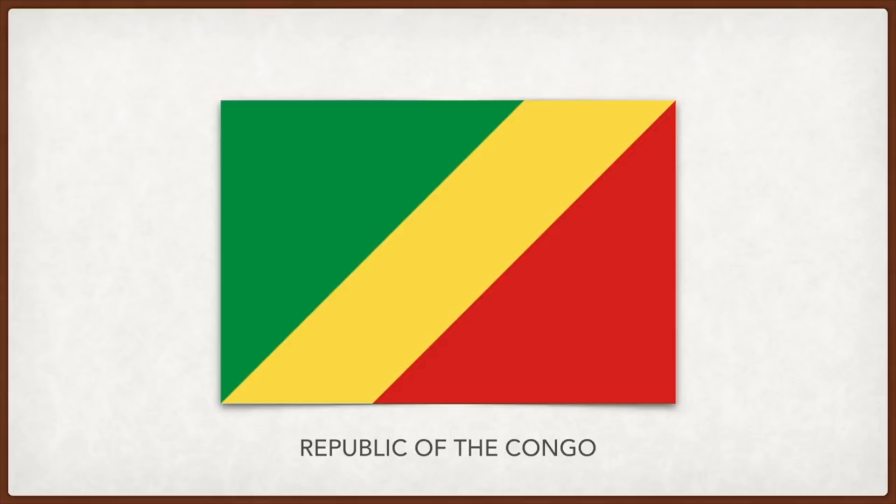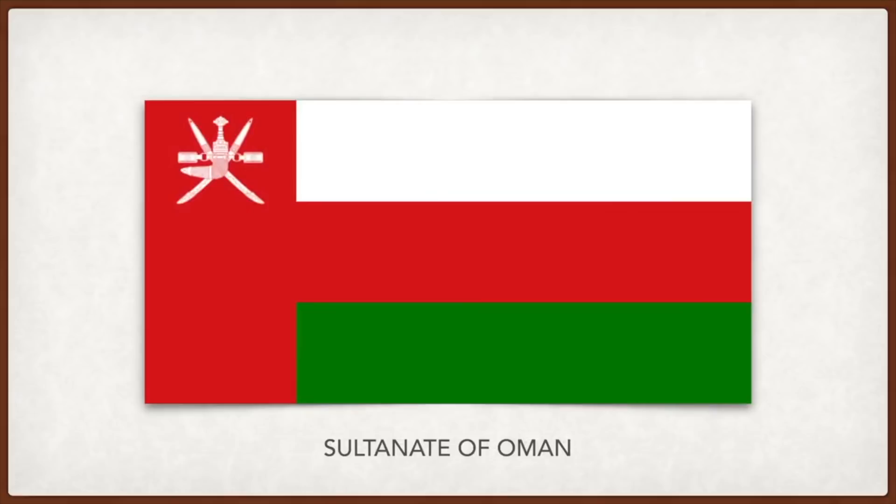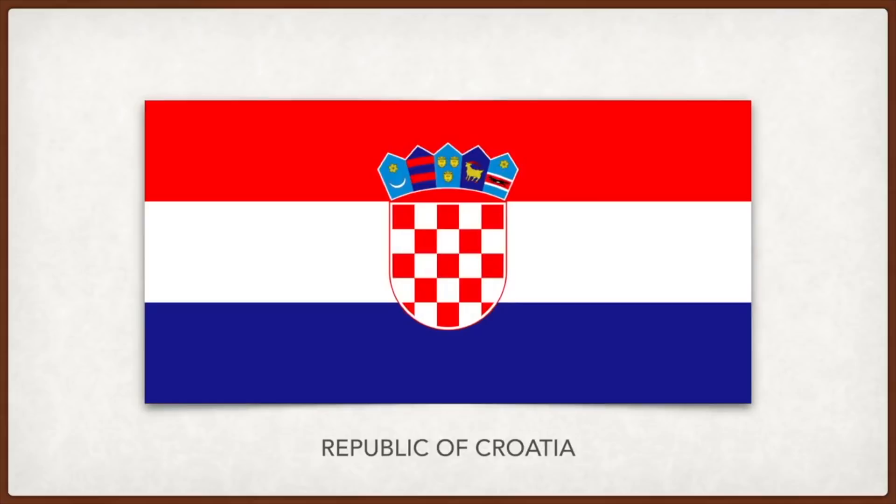Oman: white symbolizes peace and prosperity, red the battles against invaders, and green fertility of the land; the emblem symbolizes the historic weapons utilized by the people of Oman. Croatia: the colors are pan-Slavic colors inspired by the imperial Russian flag; the coat of arms in the middle is crowned with five smaller coats of arms representing the five historical regions of Croatia.